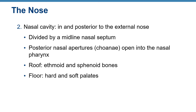The nasal cavity is in and posterior to the external nose. It is divided by a midline nasal septum into right and left cavities. Posteriorly we have openings called posterior apertures. The roof of the nasal cavity is formed by the ethmoid and sphenoid bones, and the floor is the hard and soft palate.